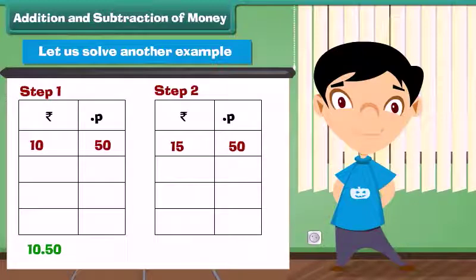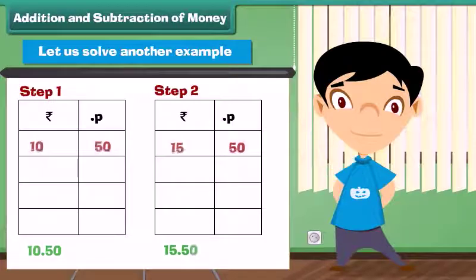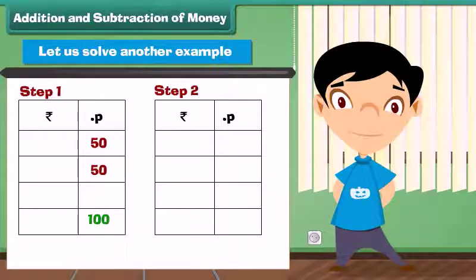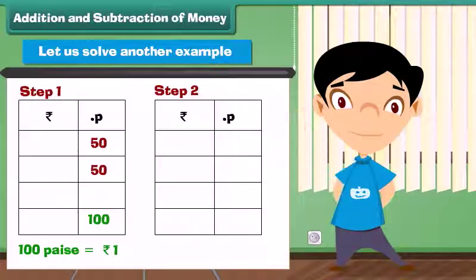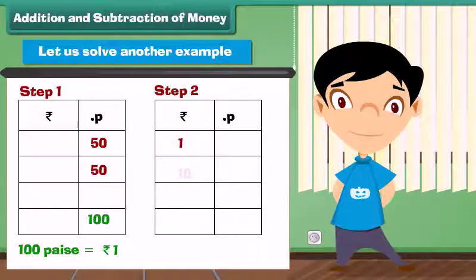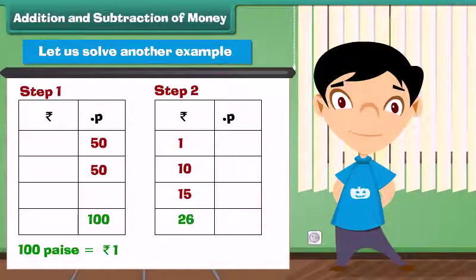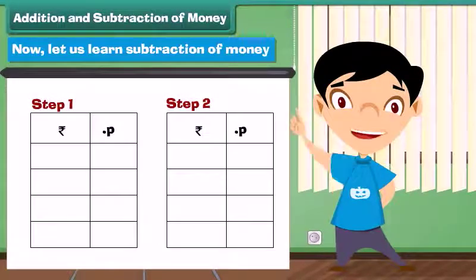Let us solve another example: what is the sum of 10 rupees 50 paise and 15 rupees 50 paise? Step 1: Write the numbers in the correct column. Step 2: Add the paise column — 50 plus 50 equals 100 paise. We know that 100 paise is equal to 1 rupee, so we write 00 below the paise column and carry 1. Then add the rupees column: 1 plus 10 plus 15 equals 26 rupees.